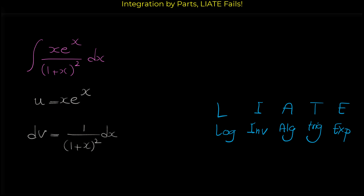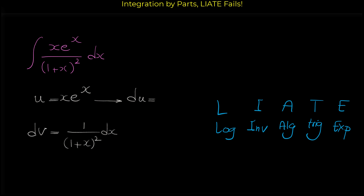After we choose u and dv, like other integration by parts questions, first you have to find du. For finding the derivative of x times e to the x, you have to use the product rule. So the derivative of x e to the x is e to the x plus x e to the x, all times dx.